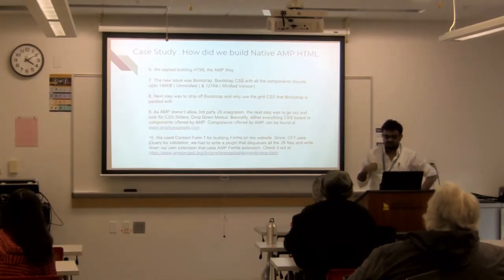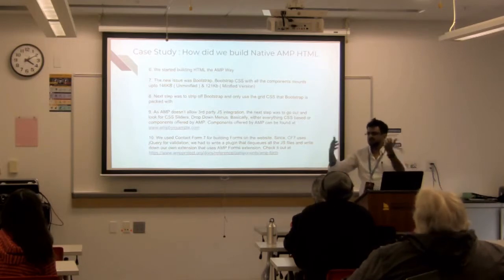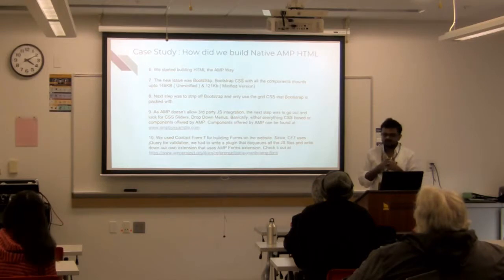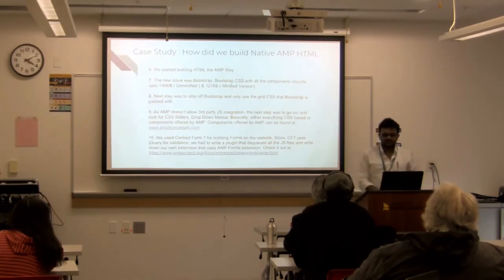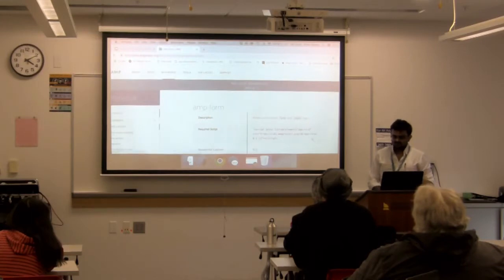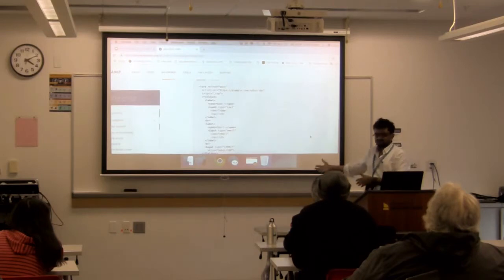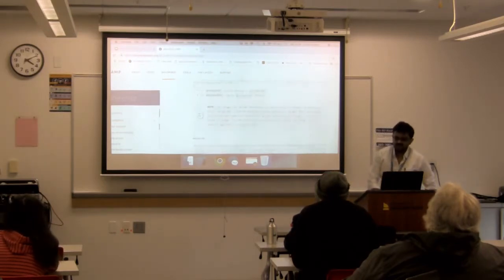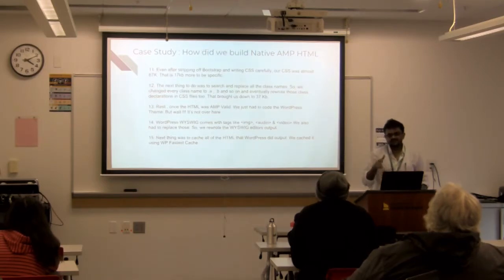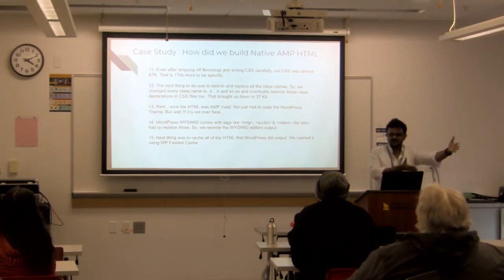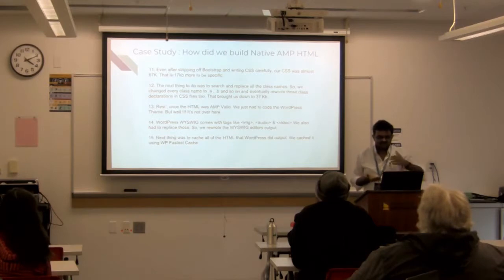We used Contact Form 7 for forms on our website, but CF7 uses jQuery for validation and submitting output to the database. So we dequeued all the JS files that Contact Form 7 was using, removed all its JS files, and coded our own extension in AMP for Contact Form 7. To do that, you refer to the AMP form documentation that tells you how to submit your form using AMP. You also need a bit of knowledge of AngularJS, because AMP is built using AngularJS — so it's all kind of proprietary Google.